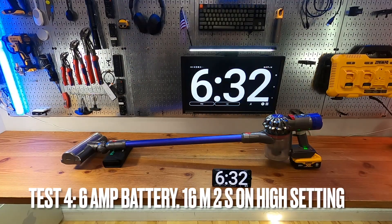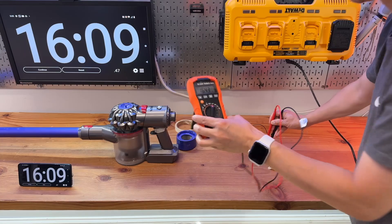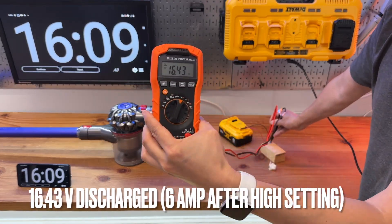The 6A battery lasted 16 minutes, 2 seconds on the high setting. Both vacuum and the battery get warm. 16.43 volts.